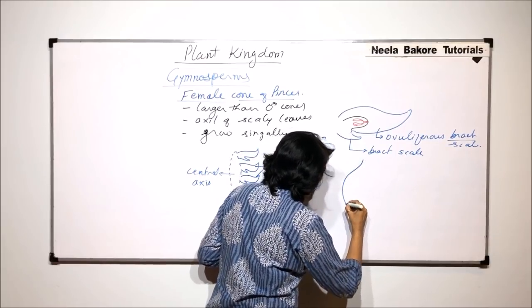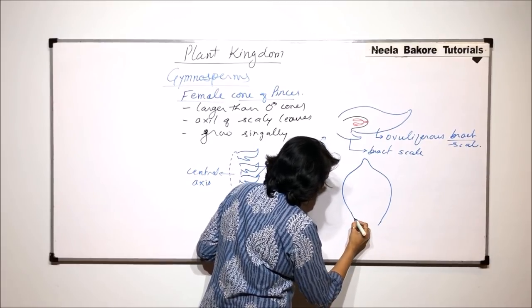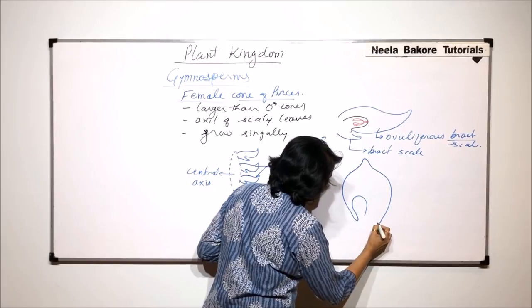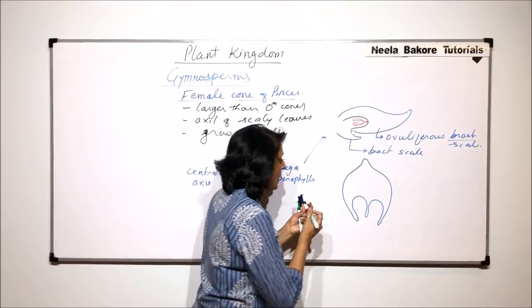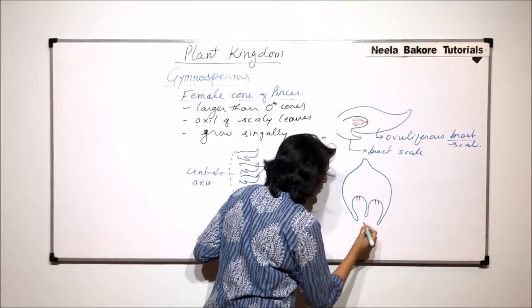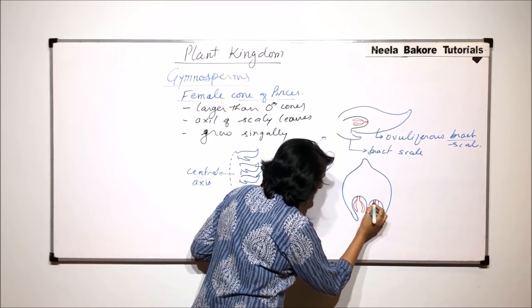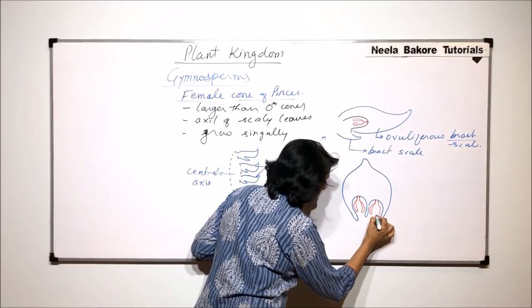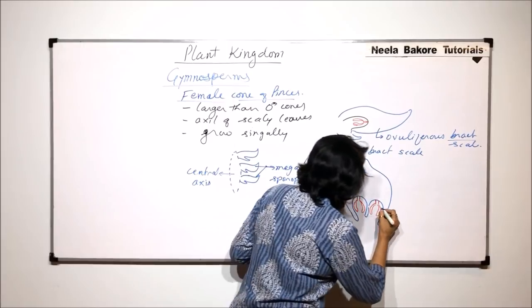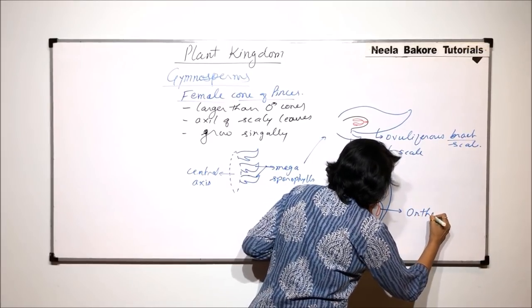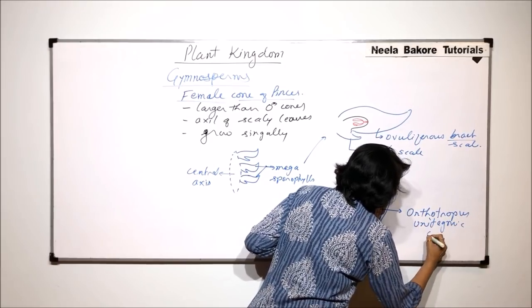Let us now draw the structure where we see both the ovules. This is the megasporophyll. On the lower side, we find that there are two such depressions, and each depression is going to have one ovule. This is the stalk of the ovule and this is the body. The ovule is orthotropous and unitegmic, which is a characteristic feature of gymnosperms.